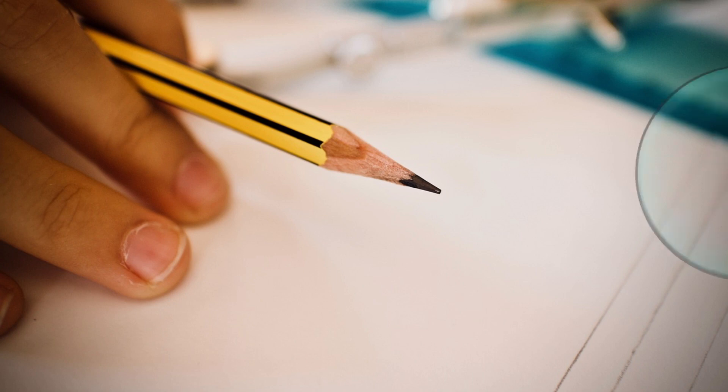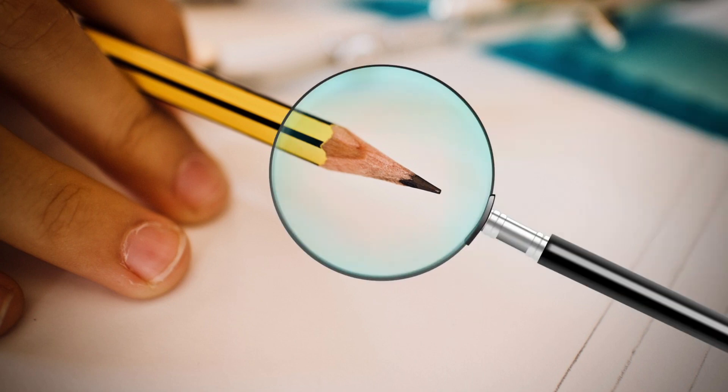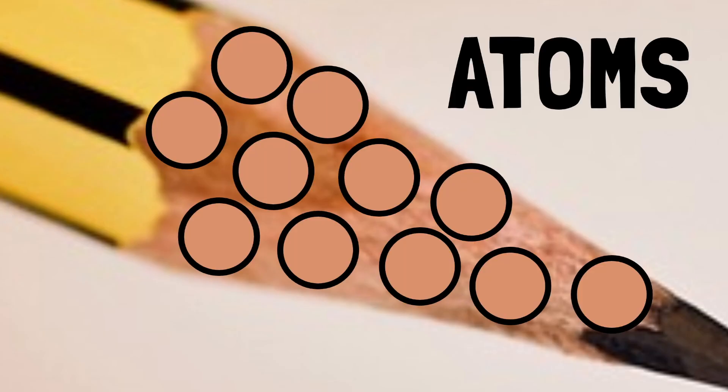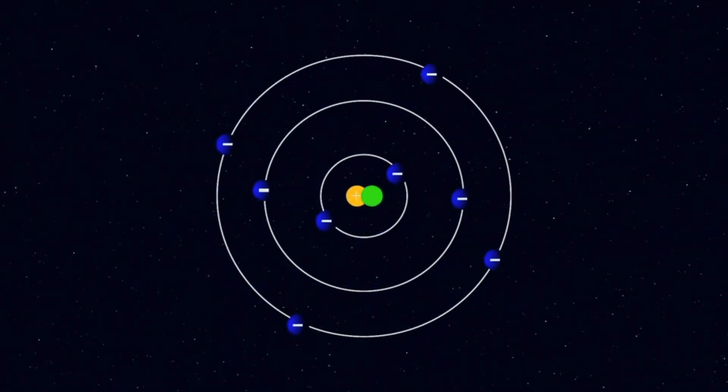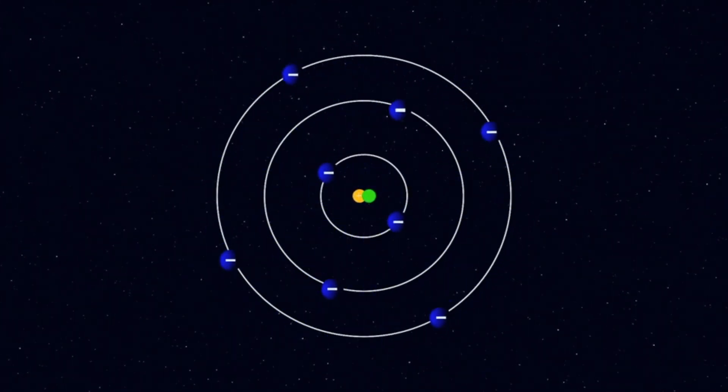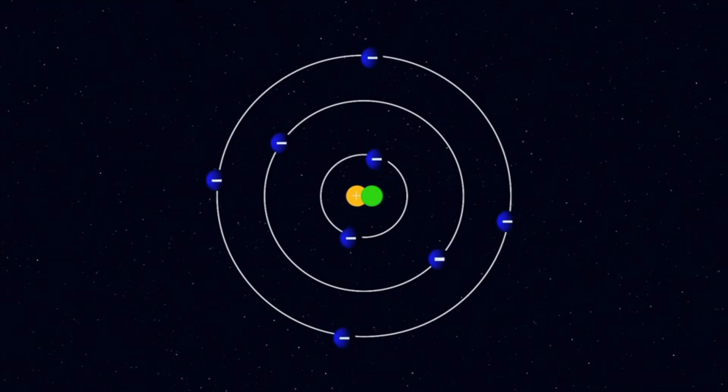If you were able to zoom in for a very close look at your pencil, you would see that it is really made of tiny particles called atoms. Think of these tiny particles like building blocks.